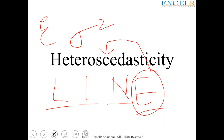If the errors are not independent, it is called the autocorrelation problem. Another assumption is around the predictor variables, the x's. If they are assumed to be linearly independent of each other, then it's fine. If the predictor variables are not linearly independent of each other, you call it the collinearity problem.